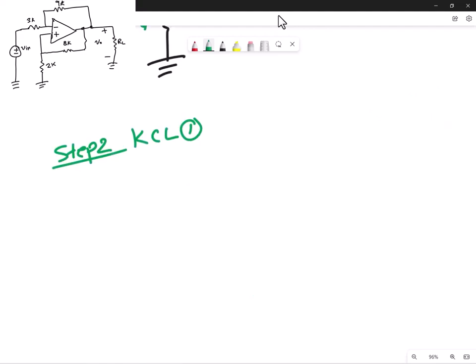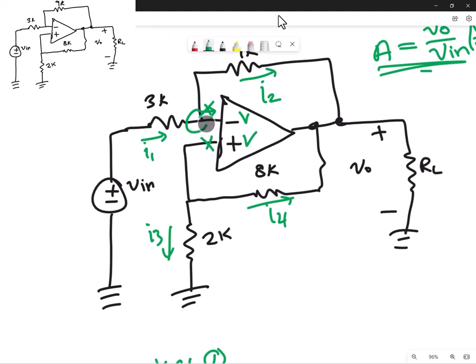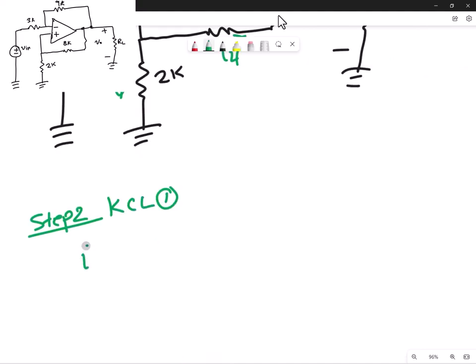Okay, so for my KCL at node one, that will be this node right here. All of my currents going into the node, I will consider in the positive, so a positive polarity. Anything that is leaving a node, I'll consider in the negative polarity. So I've got positive I1 minus I2 is equal to zero. They're going to sum to zero according to Kirchhoff's current law.